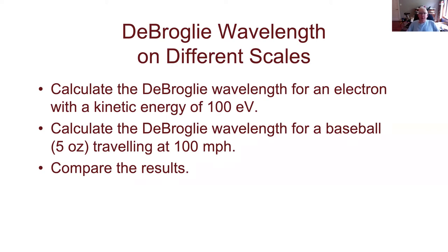The first calculation is the de Broglie wavelength for an electron traveling at a kinetic energy of 100 electron volts — an electron accelerated through a 100-volt potential, which is straightforward to produce in a lab. The second, more unusual example is the de Broglie wavelength for a baseball traveling at 100 miles per hour — a major league fastball. The baseball has a mass of about five ounces, so we'll need some unit conversions. The point is really in comparing the results.